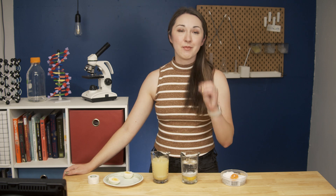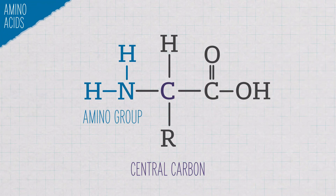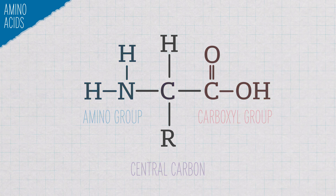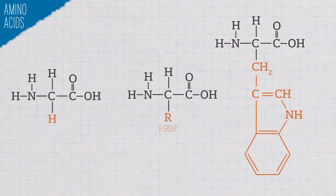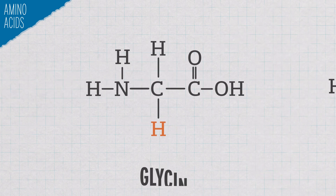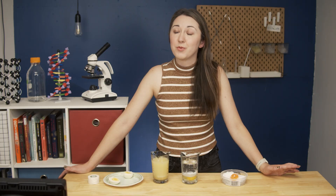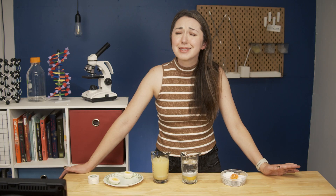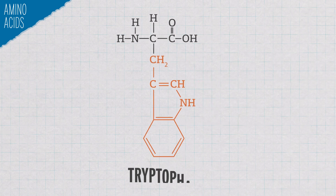Each amino acid that makes up a protein has the same backbone structure: an amino group, a central carbon, and a carboxyl group. What makes the amino acids different is the R group that extends from that central carbon. Some R groups are small — glycine's R group is just a hydrogen, which makes it the smallest and most boring amino acid. On the other end of the spectrum, you have tryptophan, which has this massive, unwieldy R group.